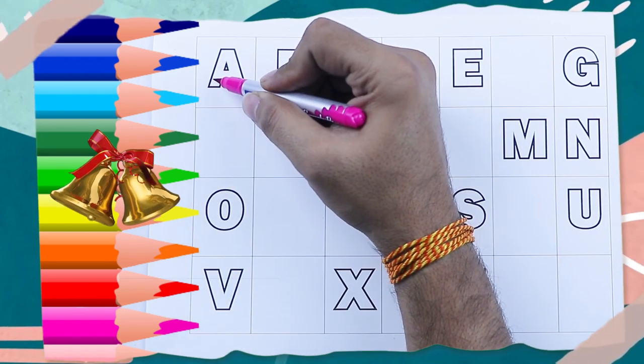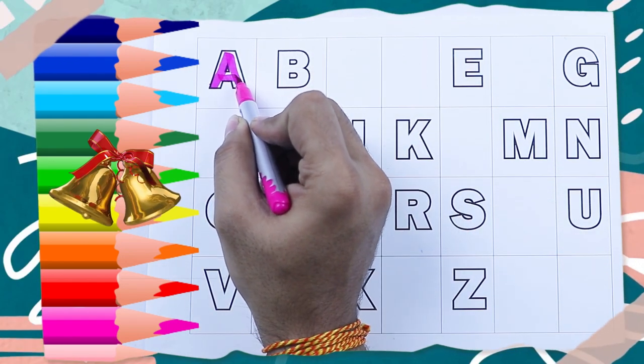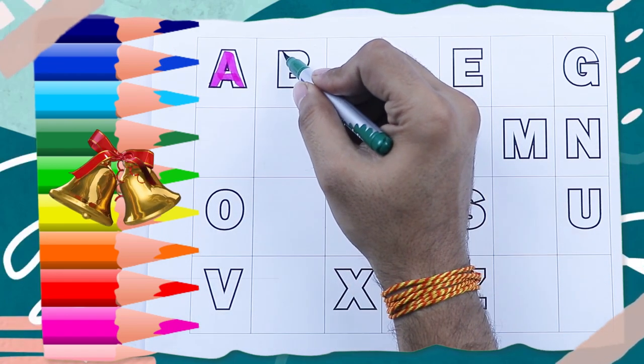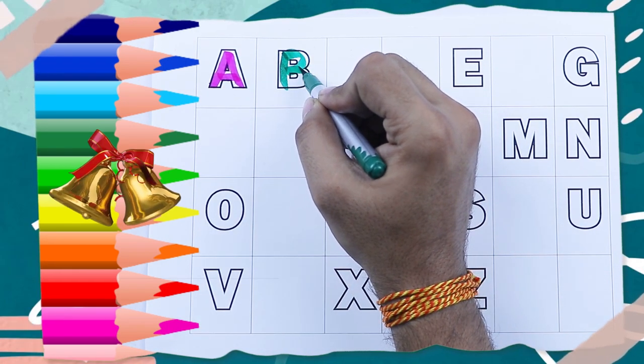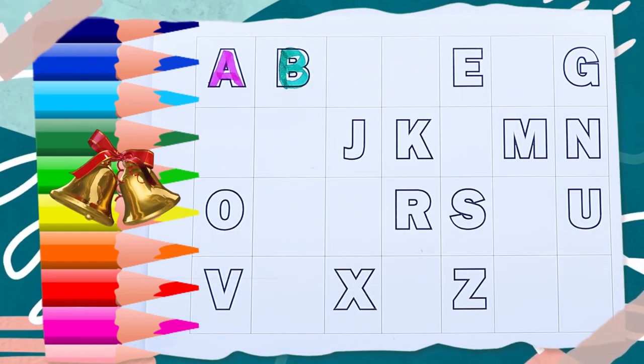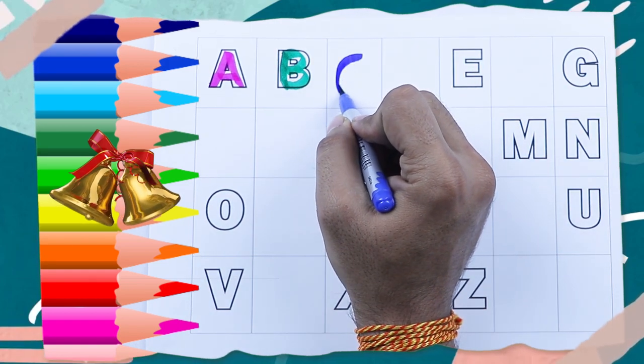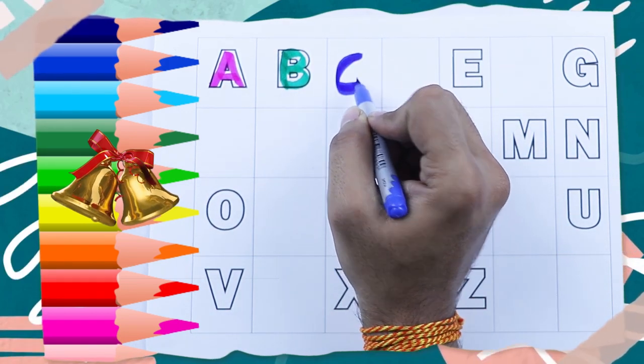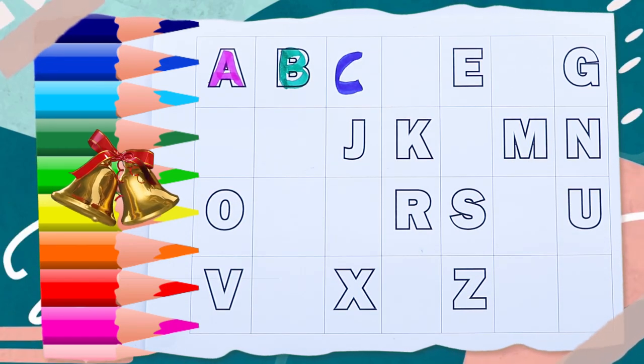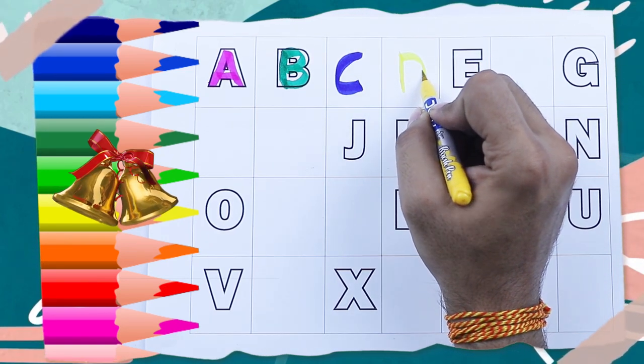Pink color, capital A, A for apple. Green color, capital B, B for ball. Blue color. C, what next? C, C for cat. Tell me what next, what is the next letter? Next letter is D, D for dog.